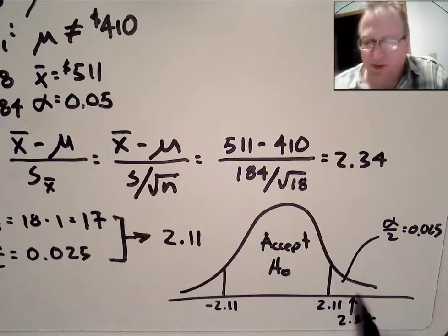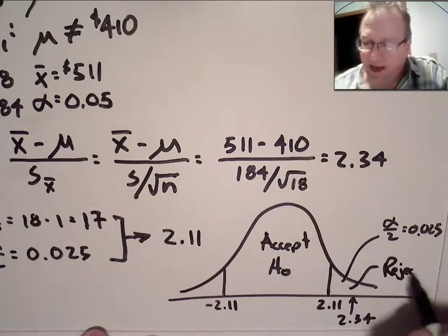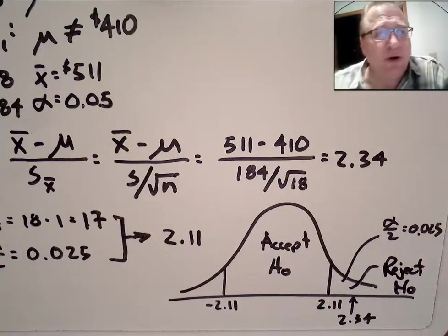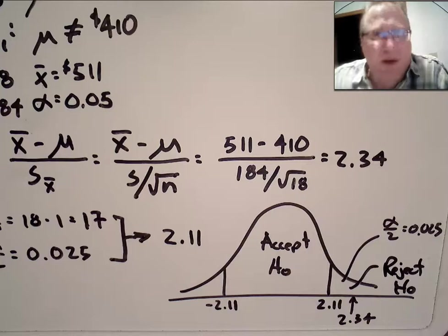We are in the reject region. Reject. And so, as a conclusion, we are going to reject H0. We are going to say that no. The amount of money in people's bank accounts is not equal to $410.